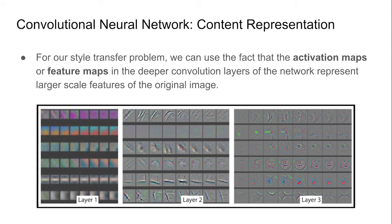For our style transfer problem, we can use the fact that the activation maps or feature maps in the deeper convolution layers of the network represent larger scale features of the original image. We can see that if we reconstruct the original image from deeper layers, we can still preserve the high-level content of the original, but lose the exact pixel information.